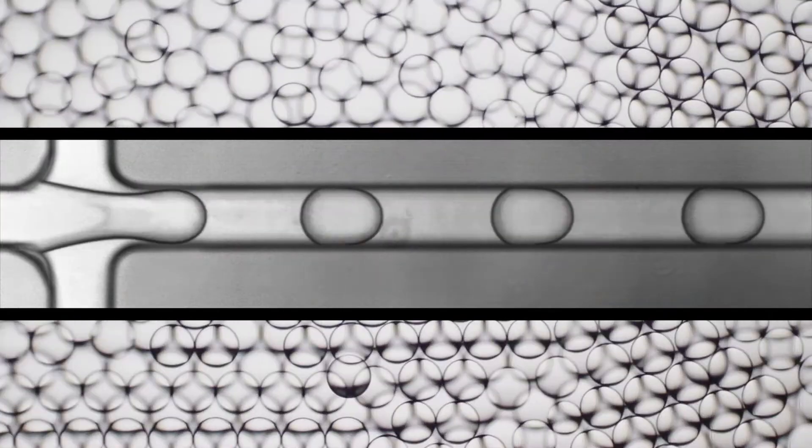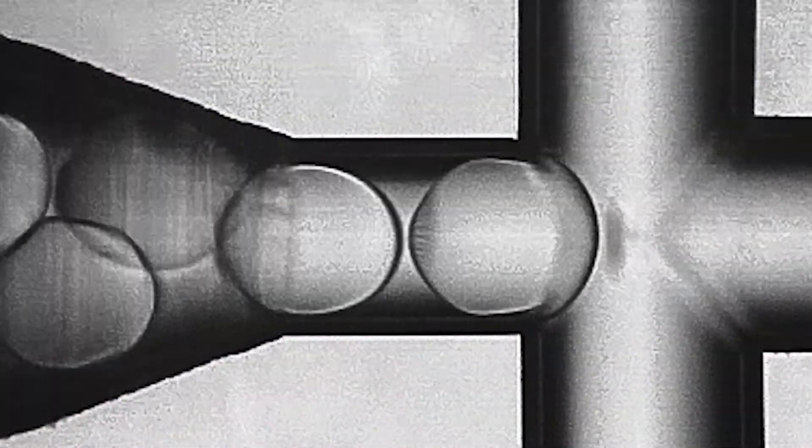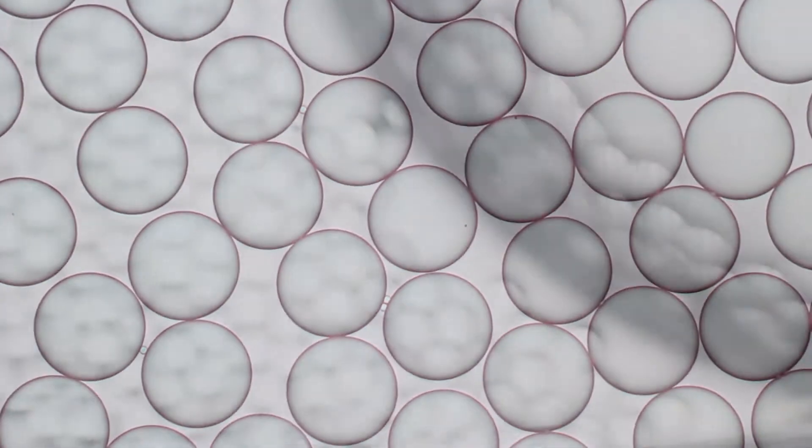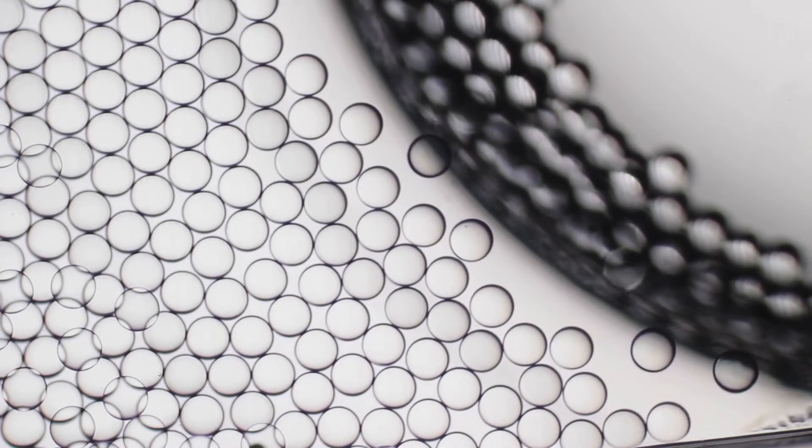It strikes me as a very good way of doing it, this idea that you'd split something up into droplets and you'd then basically put them through a fax machine. Because you can look at tens of thousands, hundreds of thousands of droplets in an automated way. For us to get that information, we would have been here for months.